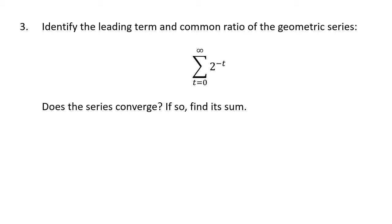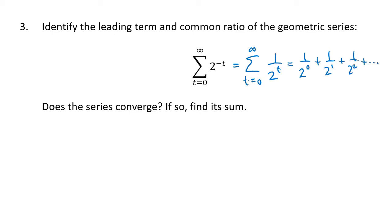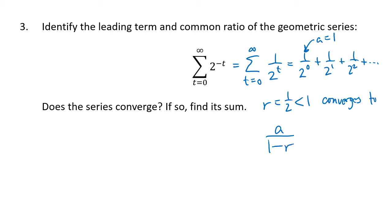The next example is written a little bit differently. Because of the negative exponent, I'll rewrite it as the sum as t goes from 0 to infinity of 1 divided by 2 to the t. The first term is 1 divided by 2 to the 0, then 1 over 2 to the 1st, 1 over 2 squared, and so on. The top is staying the same but the bottom is getting multiplied by 2 each time, so the common ratio is 1 half. Since 1 half is less than 1, this converges. Here a equals 1 because 2 to the 0 is 1, so this converges to 1 divided by 1 minus 1 half, which works out to be 2.